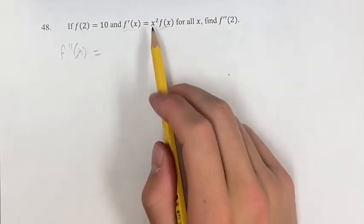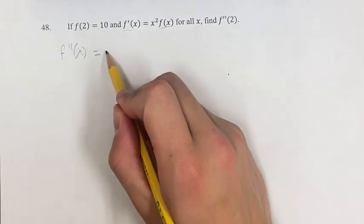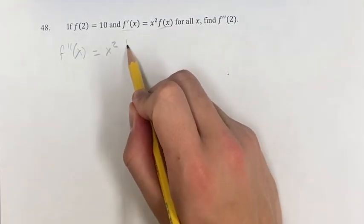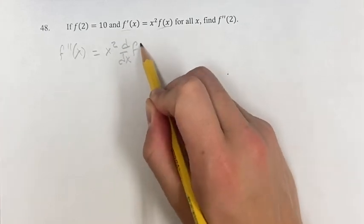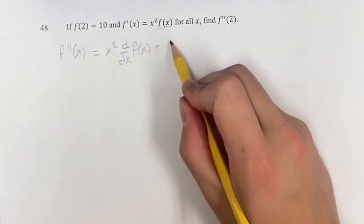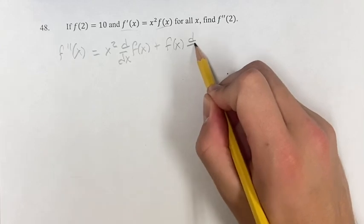we're going to need to use the product rule since we have x² times f(x). So it's going to be one times the derivative of the other, and then plus the other times the derivative of the first one.